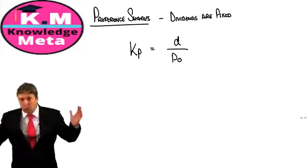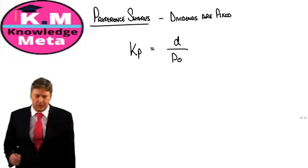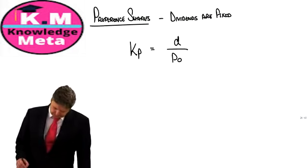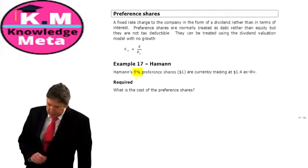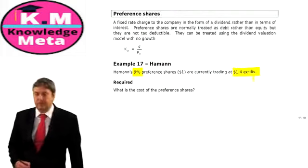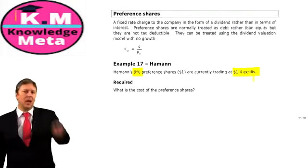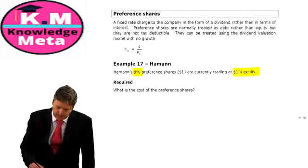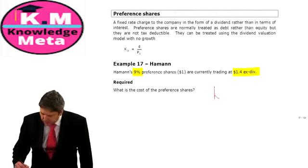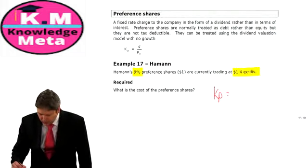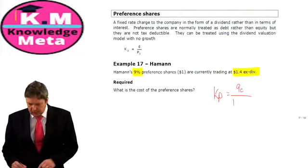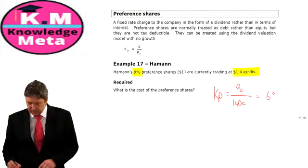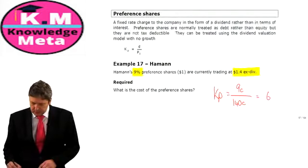From that perspective, the cost of a preference share, KP, is simply D / P0 — the fixed dividend divided by the current share price — using the perpetuity formula with no growth. It's only a one-marker, but let's make sure we get it. For example: Haman's 9% preference shares are traded at $1.40 ex-div, so KP = 9 cents / 140 cents = 6.4%.